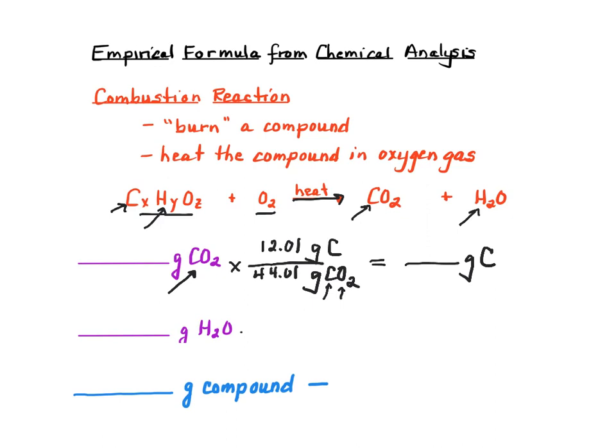Similarly, for water, we're going to multiply by the percent composition of hydrogen. There's two H's in there. So, two times 1.01 grams of H for every 18.02 grams of water. Again, that's just the molar mass of water, and this will give us the grams of hydrogen.